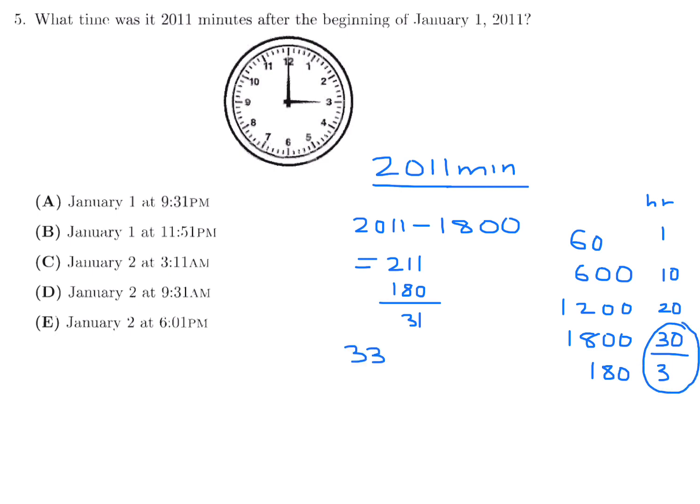So 33 hours and 31 minutes after January 1st, 2001 at the very beginning, so midnight. Well, the first 24 hours is going to be the entire day of January 1st. And then once 24 hours is subtracted from that, I have 9 hours and 31 minutes remaining. And that's going to be the beginning of January 2nd. So when January 1st begins, after 9 hours and 31 minutes, it'll be 9:31 a.m. on January 2nd. And that is choice D for number 5.